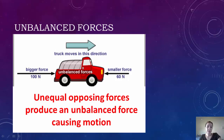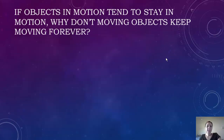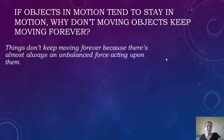Whether it's friction or gravity, there's just always something there to make that force unbalanced. So for an example, when you're sliding a book across a table, it's going to slow down and stop. That's almost always an unbalanced force acting upon it.